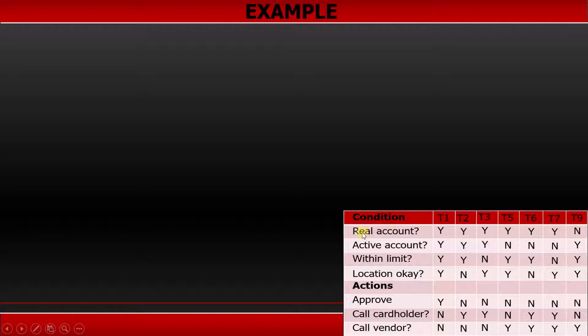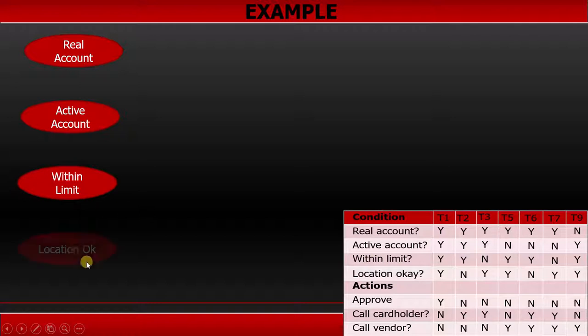So the conditions are real account. You can see here, we have listed down real account here. The next point is active account. This is here now. Within limit. And the last one is location OK. So these were the four conditions which we have listed down here.